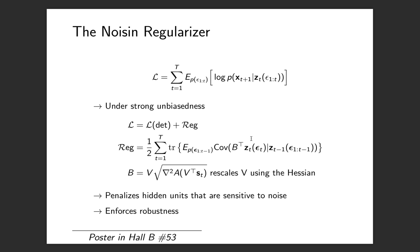One very interesting aspect of NOISIN is that under strong unbiasedness you can actually write its loss as the loss function of the deterministic RNN, the underlying RNN you are regularizing, and a regularization term. This regularization term penalizes hidden units that are sensitive to noise, so it enforces robustness. You can think of this regularization term as basically a summation of the variances of the hidden units, where the hidden states are rescaled by this matrix B that takes the output matrix of the underlying RNN you are regularizing and multiplies it by some term involving the Fisher information matrix of the RNN model.